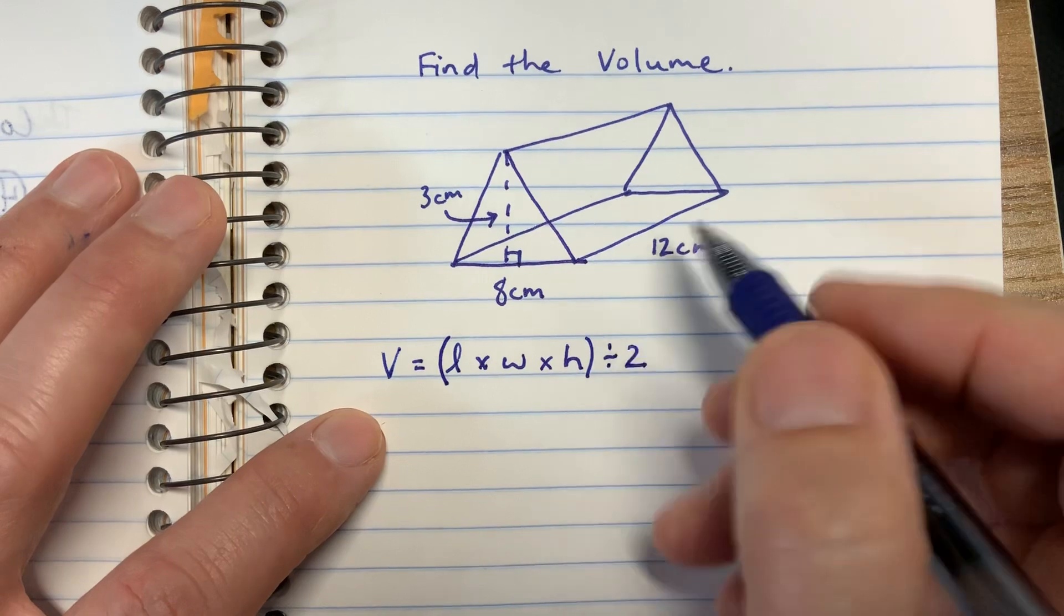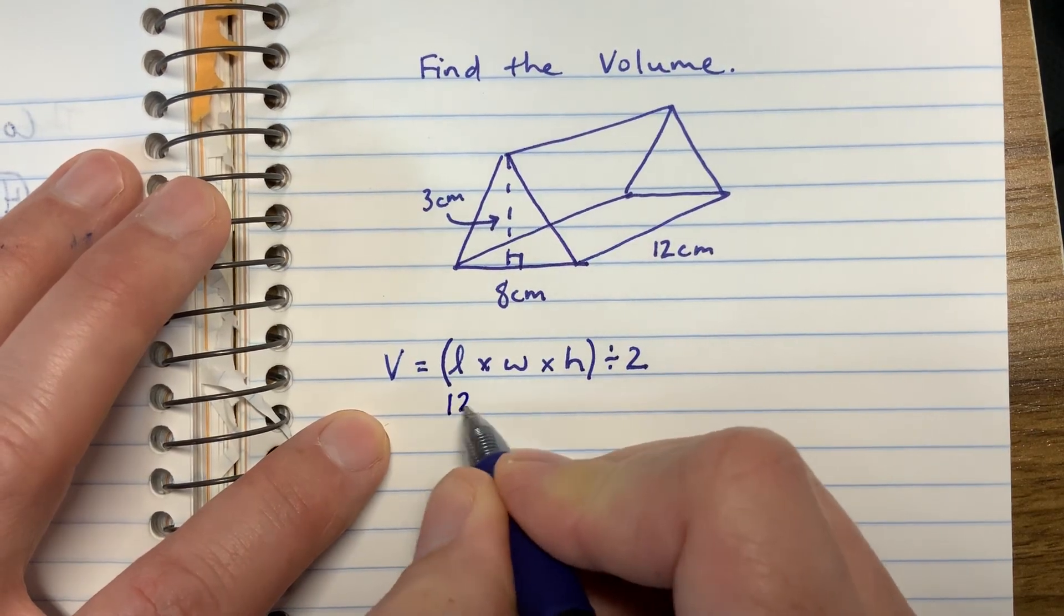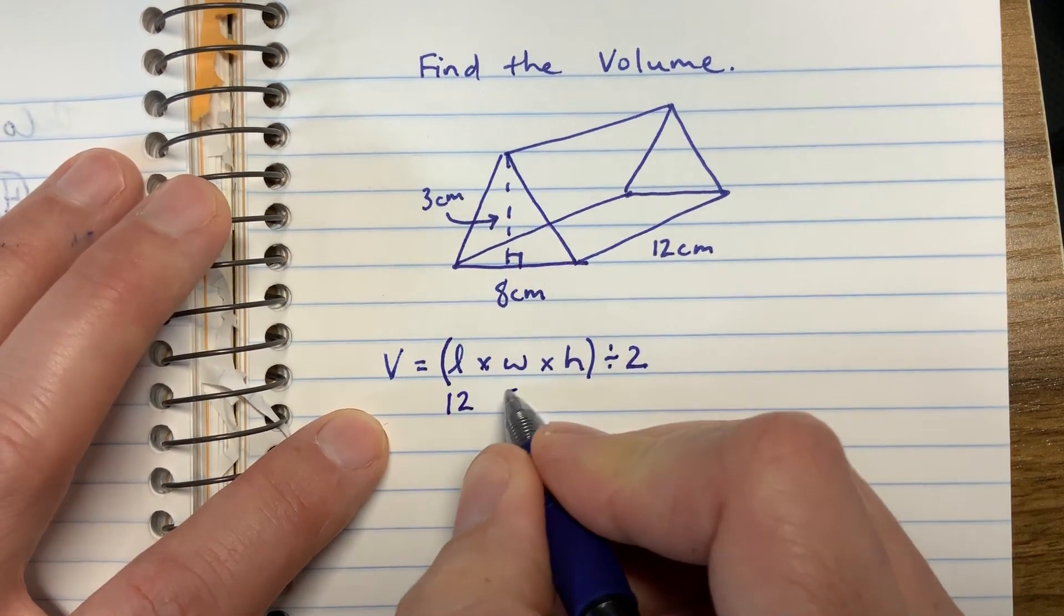All right, so the length is the long part, 12. The width is how wide the triangle is, 8.